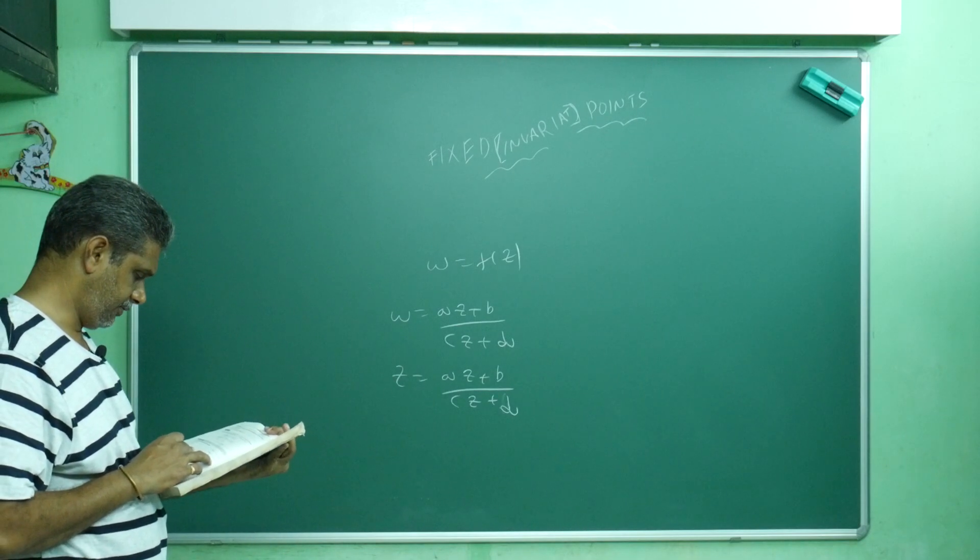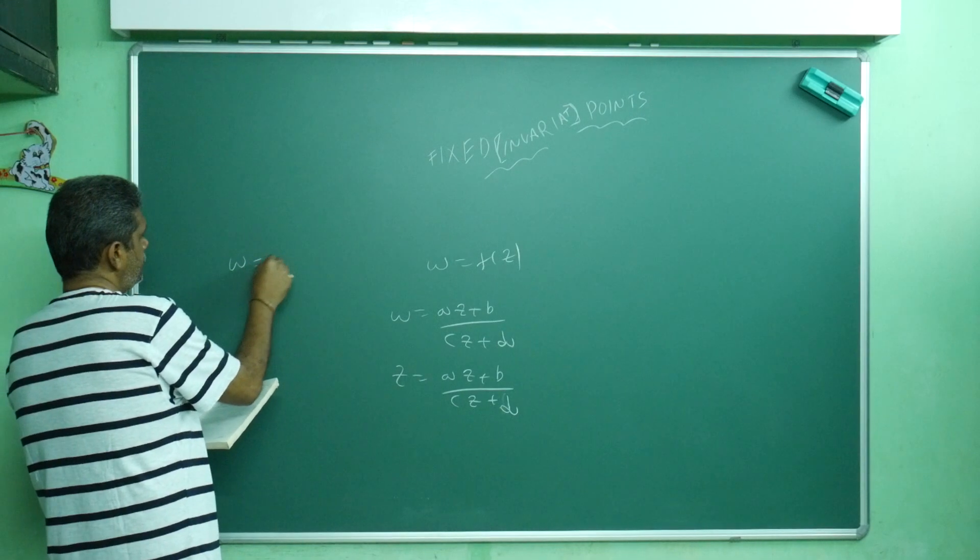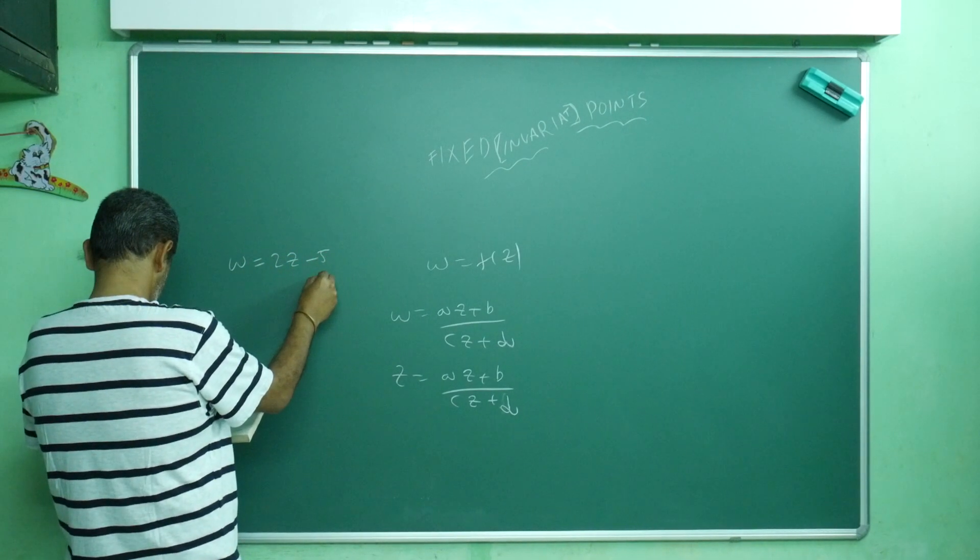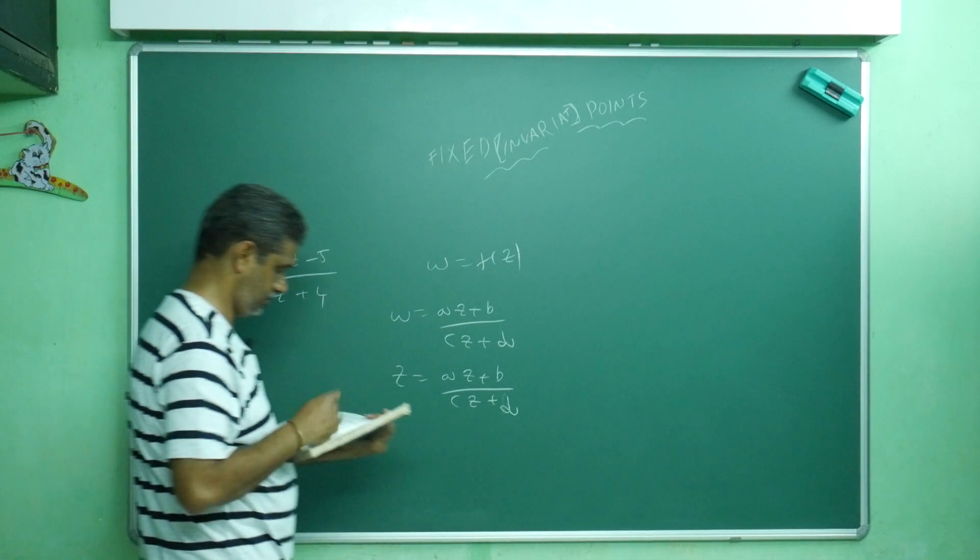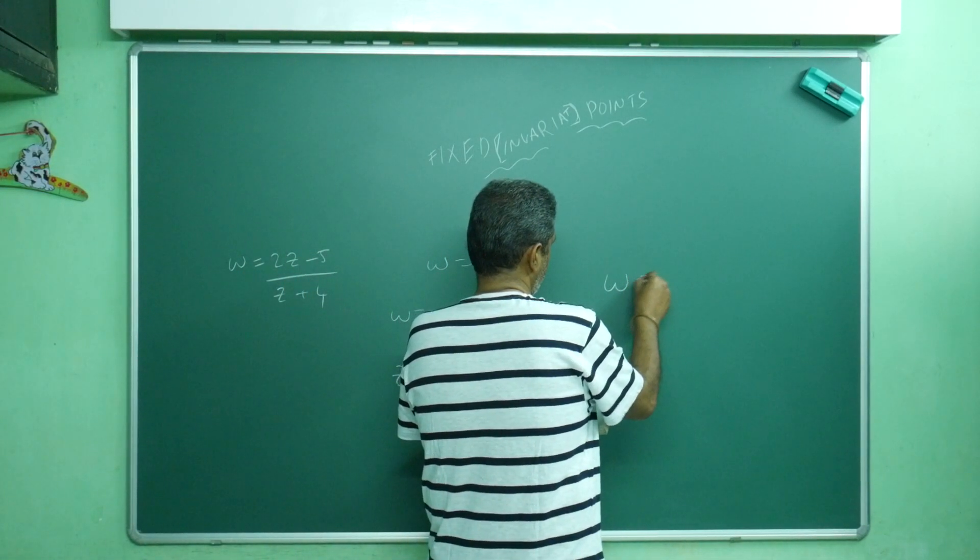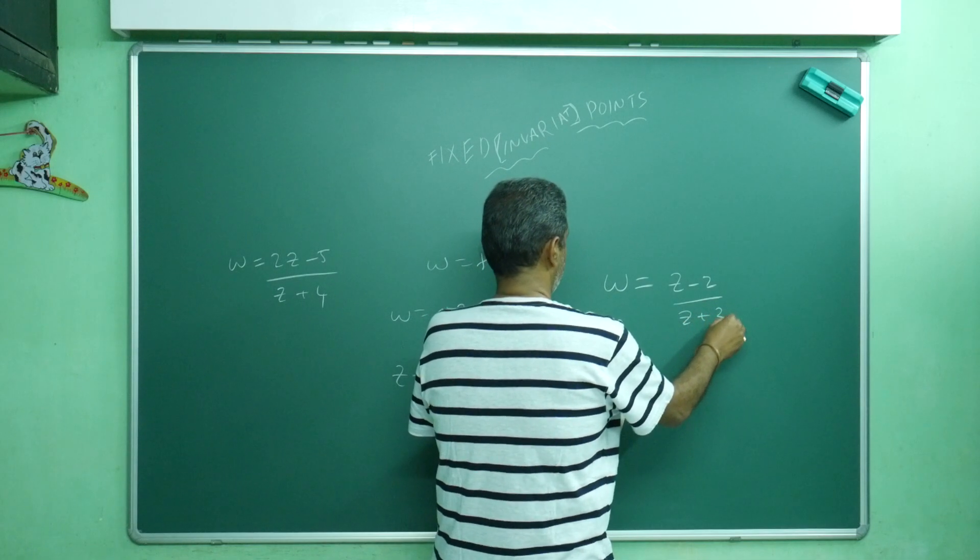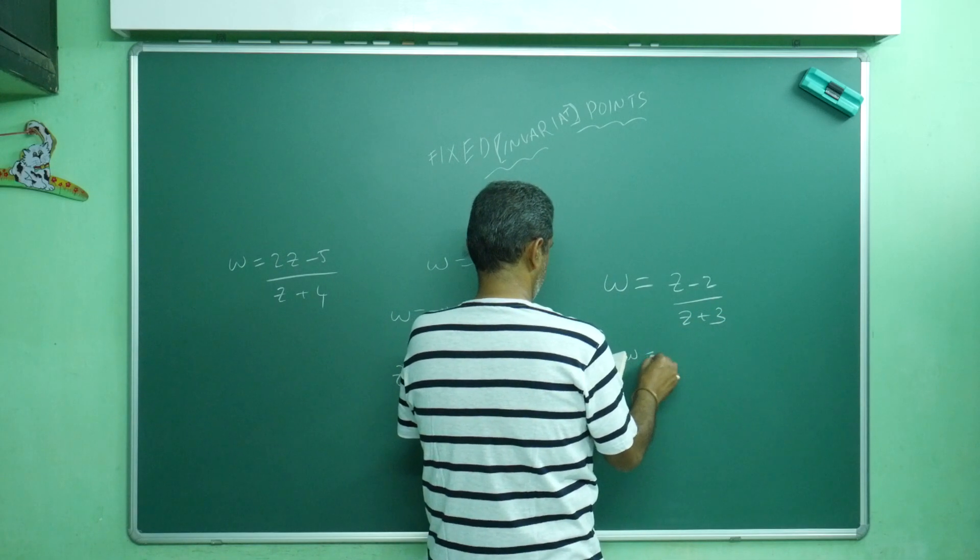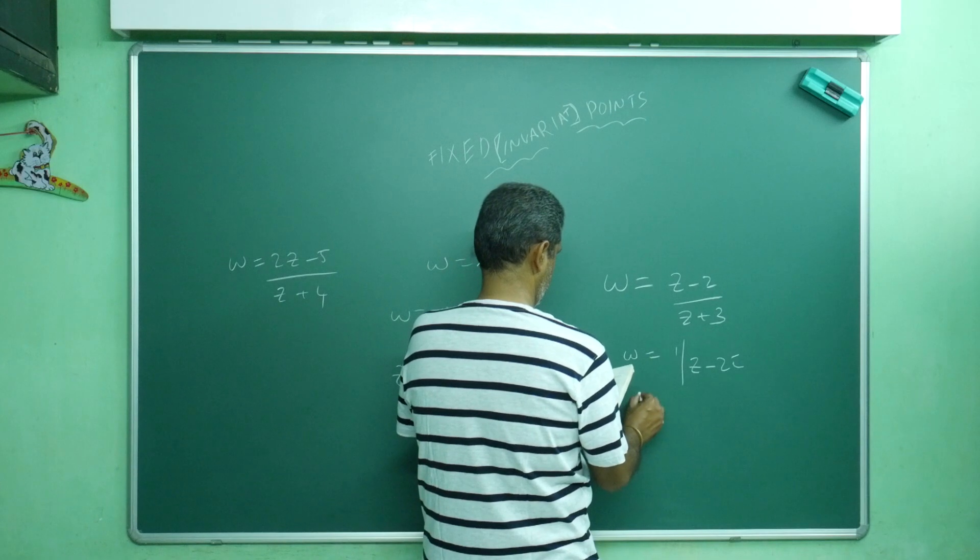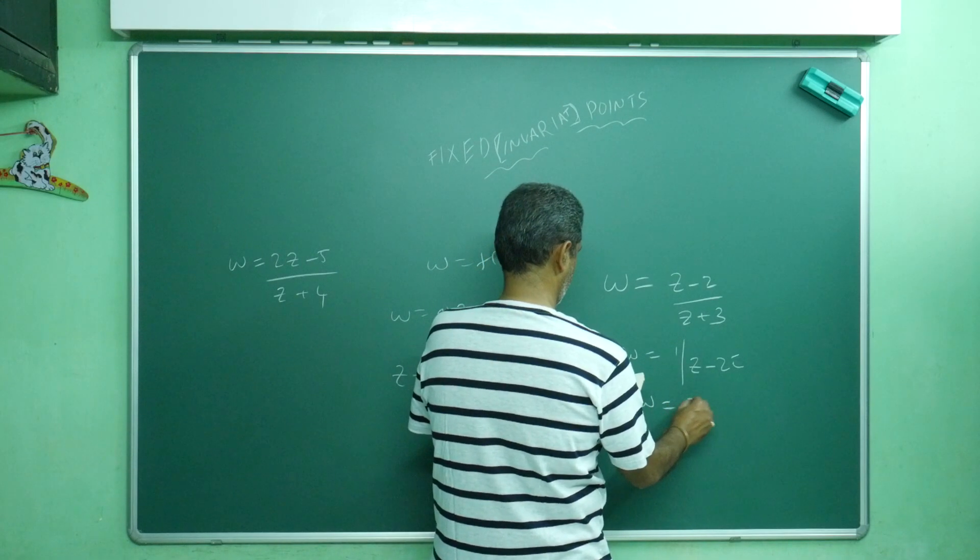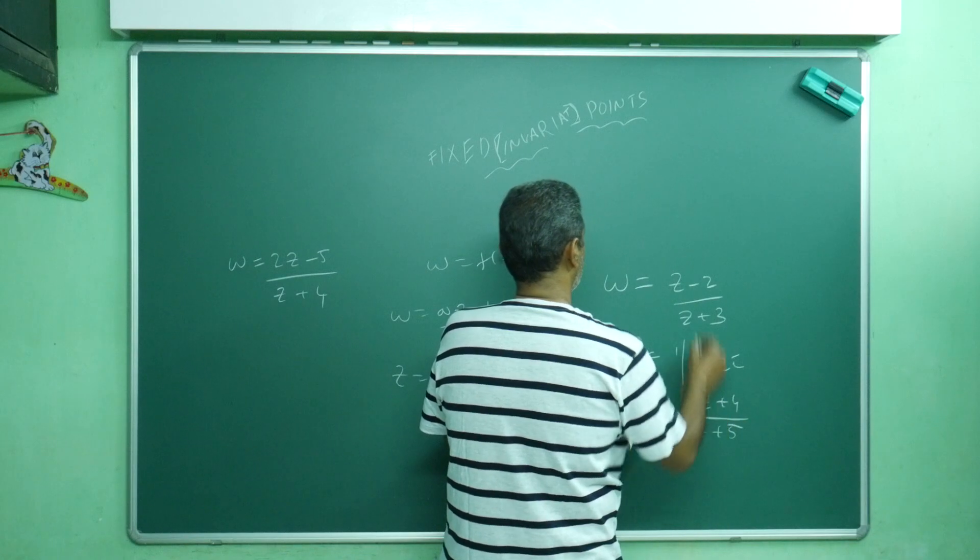Find the fixed points of the following mappings. I will give you a few problems. One or two I will do, the remaining you can solve. w equals 2z minus 5 divided by z plus 4. w equals z minus 2 divided by z plus 3. w equals 1 divided by z minus 2. w equals 5z plus 4 divided by z plus 5. You can do these.